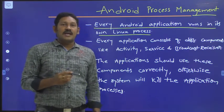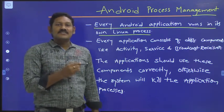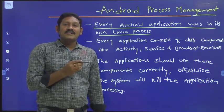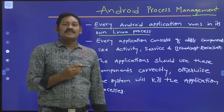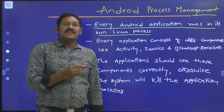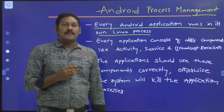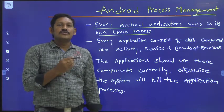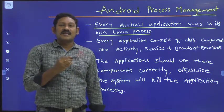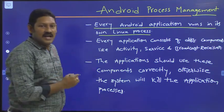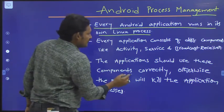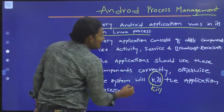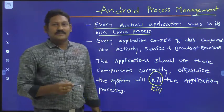Every application consists of different application components like activity, service, broadcast receiver, etc. The application should use these components correctly. If anything goes wrong, the system will kill the application process.